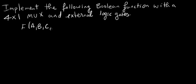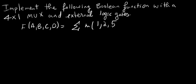The Boolean function has inputs A, B, C, D, S, and the minterms are 1, 2, 5, 7, 8, 10, 11, 13, and 15.